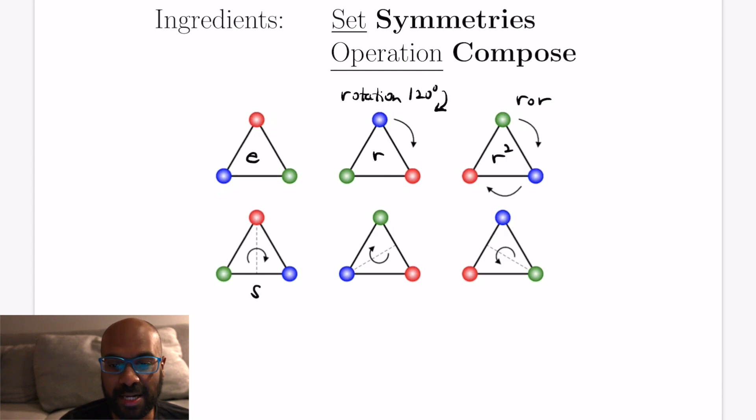Now we have these other two symmetries that actually can be achieved by composing previous symmetries that we see here. For example if we take the result of applying r squared and then we flip across s we'll actually end up with this reflection here on the bottom center and we'll write that as sr squared because we think about this as functions with r squared first and then s afterward. Similarly the last thing will end up being sr. So these six objects are objects that reflect the symmetries of an equilateral triangle.